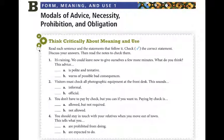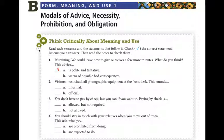Let's think critically about meaning and use. We'll read each sentence and the statements that follow it, then decide which one is correct. Number 1: 'It's raining. We could leave now to give ourselves a few more minutes. What do you think?' We could leave now — this advice is polite and tentative. It is not a demand, not an imperative, not an order. It's a suggestion.